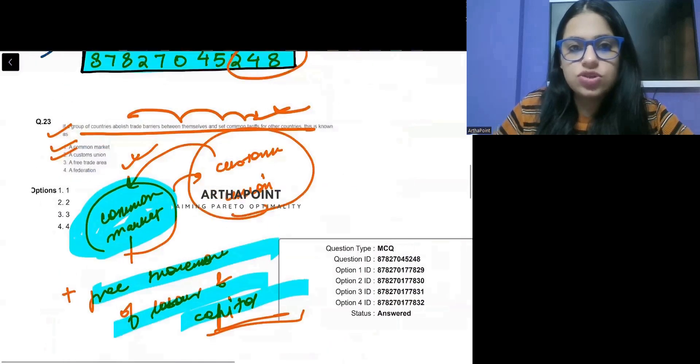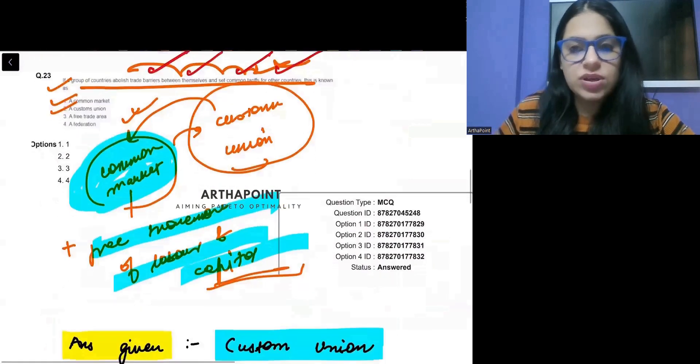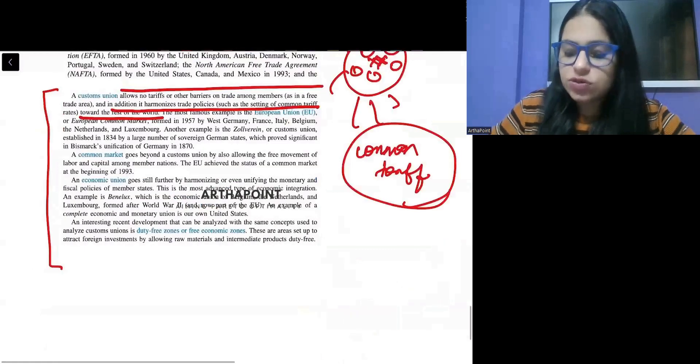So actually that is exactly what the question is asking. If you notice, it abolishes trade barrier between themselves and set common tariff. The custom union is definitely the correct answer.